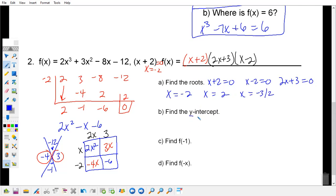Then you're going to find the y-intercept. You have a couple ways of finding the y-intercept. Way number one is just plug 0 in for everything. Or way number two is go back to your original f of x. Remember, your y-intercept is always your constant. So my constant is negative 12. So my y-intercept is at 0, comma, negative 12.